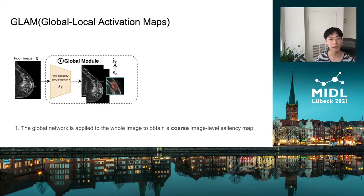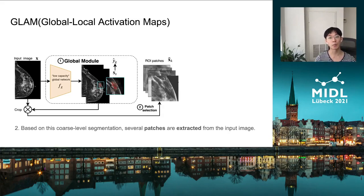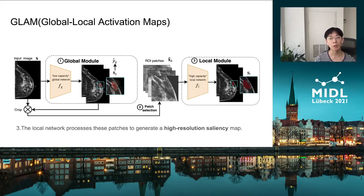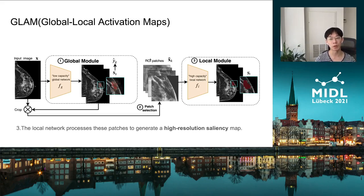In order to do that, we first have a low-capacity global network applied on the whole image, so that we can get a coarse image-level saliency map. Based on that, we have a patch selection method to extract key patches that may contain lesions. Then we have a high-capacity local network to preserve the resolution of the patches and produce high-resolution saliency maps. Our final saliency map is a combination from the global module and the local module, so that it is aware of both global context and local details.